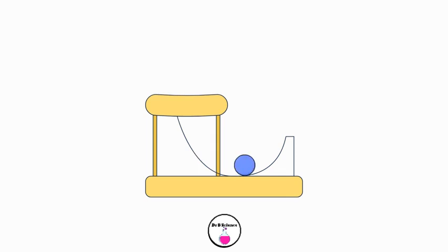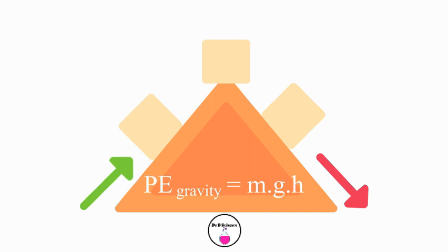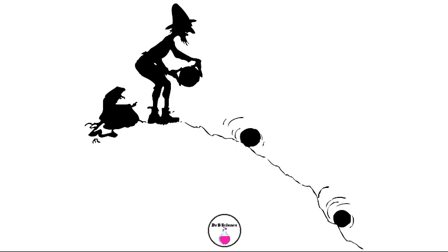Potential energy: stored energy based on position or state. For example, gravitational potential energy is energy stored due to an object's height. A rock on top of a hill has gravitational potential energy.